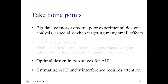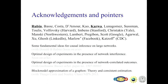In conclusion: this is a conference on big data, but big data cannot overcome poor experimental design or poor analysis — especially in social sciences where we target many effects that are small, so sharp standard deviations are critical. What I showed is optimal design in two stages for the average interference effect, and how estimating the average treatment effect under interference requires care. Thanks to Don Rubin, Vishesh Karwa, and a number of students and postdocs who are working on this.